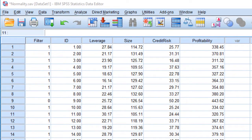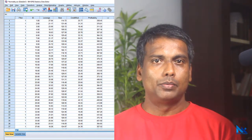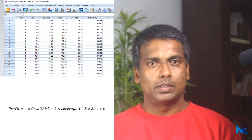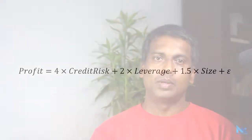In this demonstration I use this dataset to test the normality in a regression analysis. This is a deliberately prepared dataset which nicely fits with this regression model. For example, the regression coefficient should be 4 for credit risk, 2 for leverage, and 1.54 for size. If the regression analysis is capable of estimating these coefficients from the dataset, we can say that the regression is also accurate.